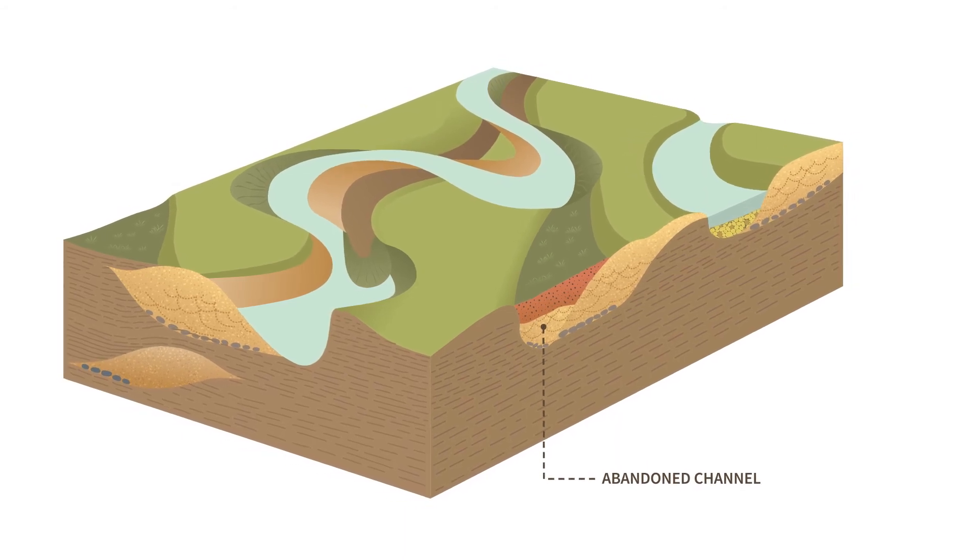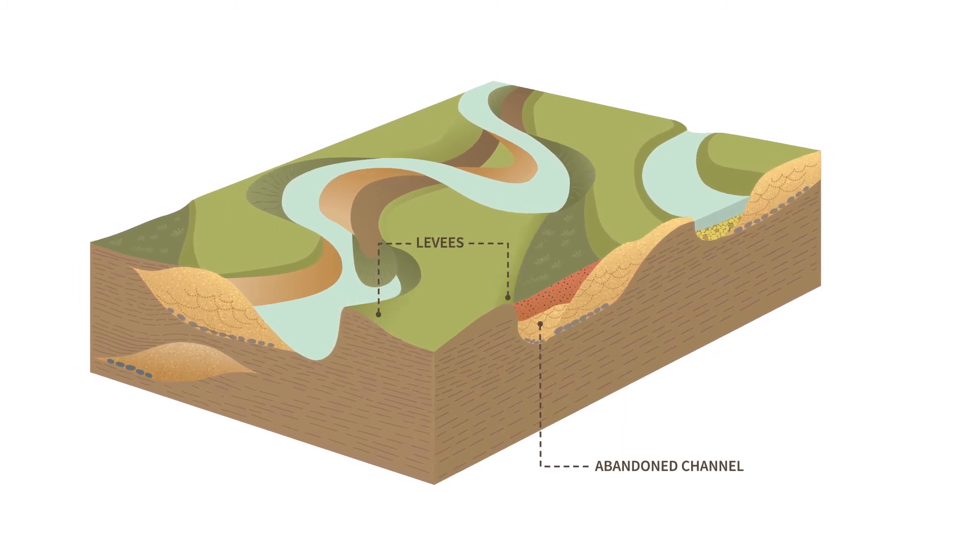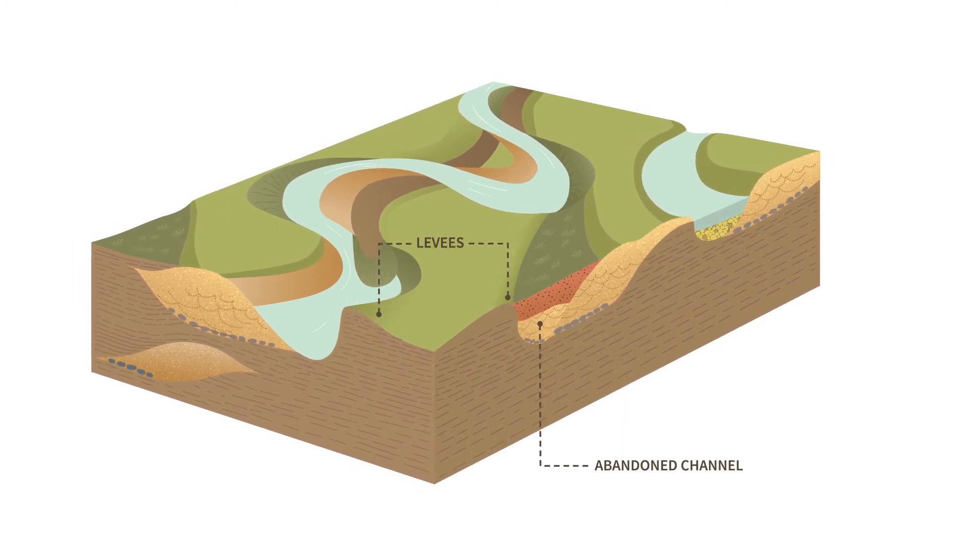This results in the suspended coarser sands being deposited as levees on the sides of the river, and the silts and clays being spread out over the floodplain.